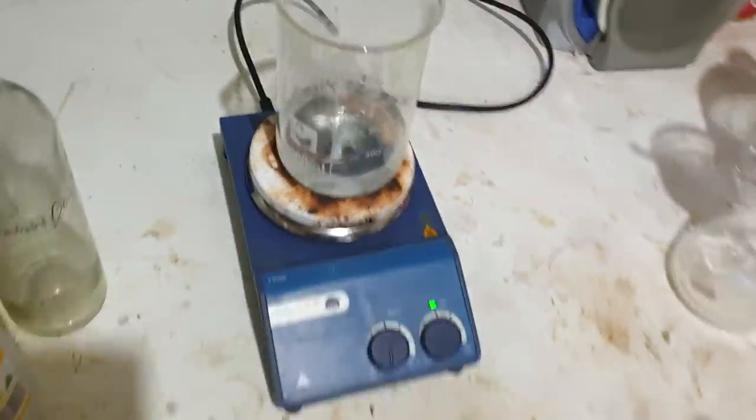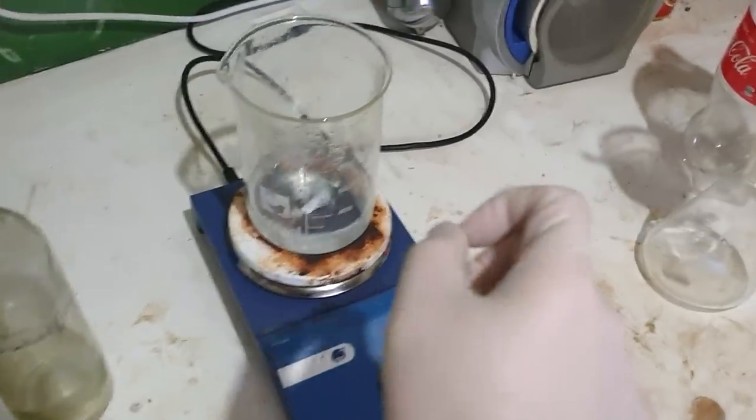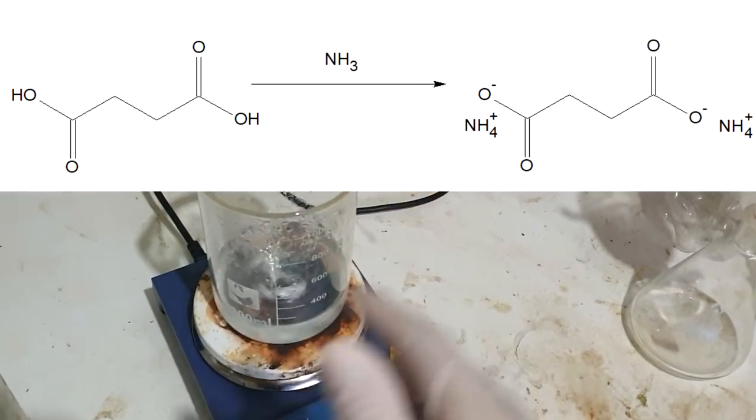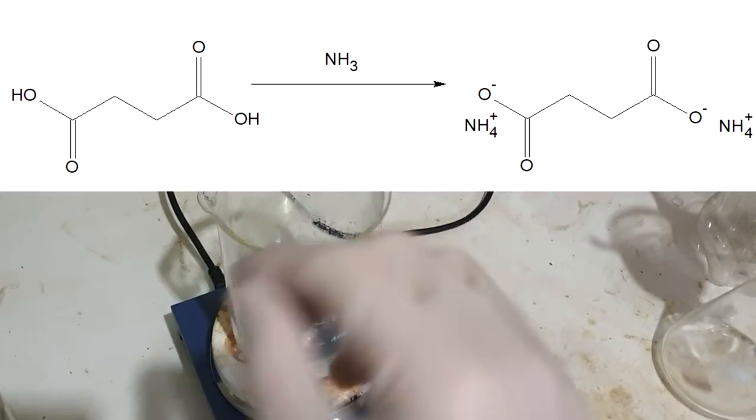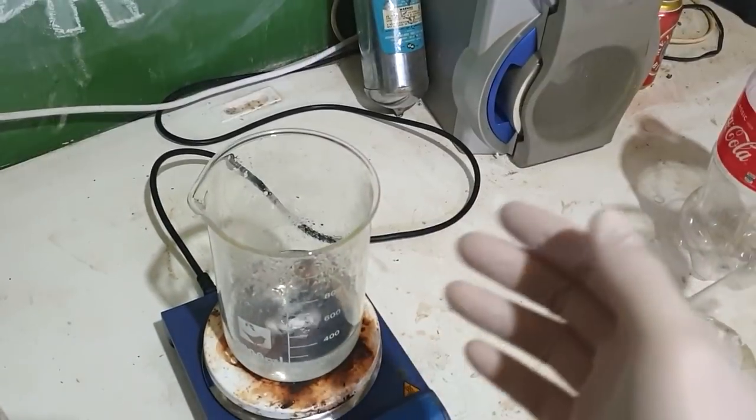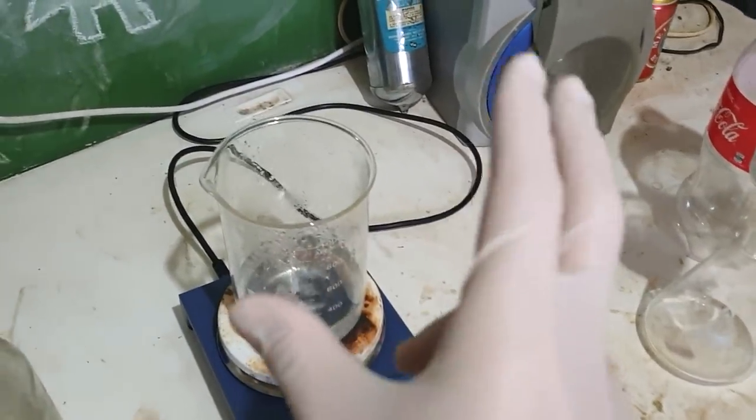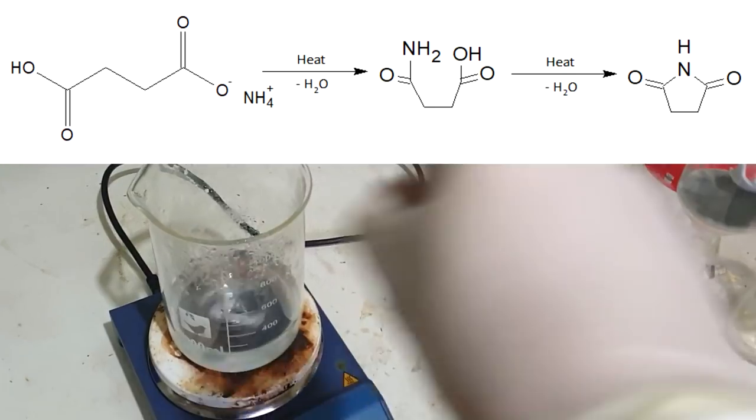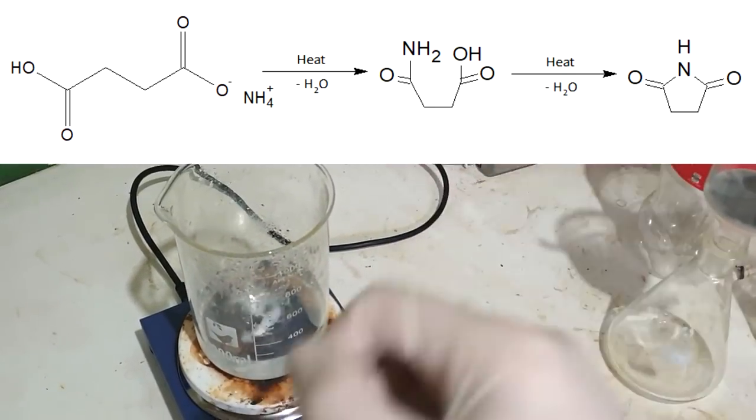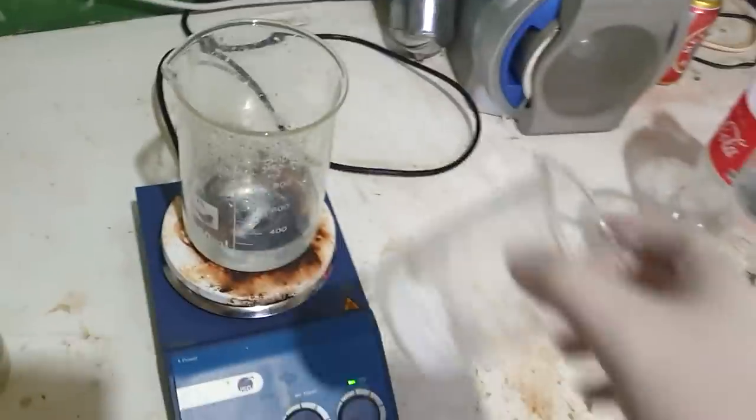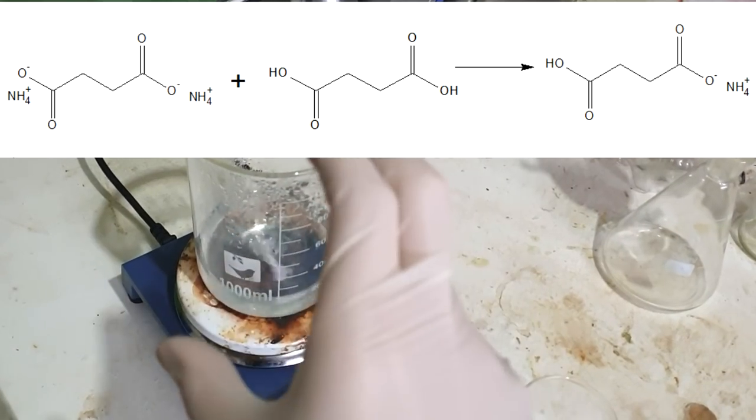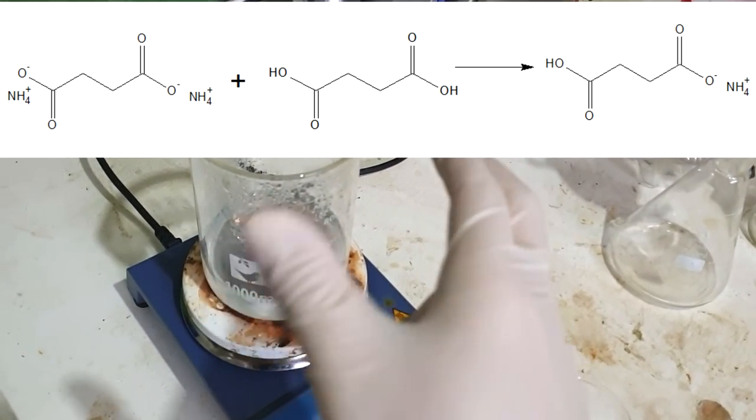I only boiled it for a couple minutes, so not sure it did anything. But now we've fully neutralized all the succinic acid. Succinic acid has two acidic groups, one at each end of the molecule, and we've added enough ammonia that both are neutralized, so we have diammonium succinate. What we actually want for this reaction is only one of those groups neutralized, because we want the neutralized one to attack the other end and the molecule will cyclize. This is where our other 25 grams of succinic acid comes in.